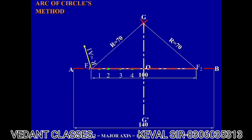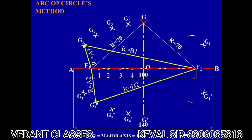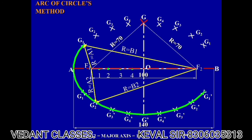Likewise, from F2 take a distance equal to B1 and continue making arcs. Keep making arcs like this to get successive points. When you have all the points, join them all to get the curve called an ellipse. This is how you can make an ellipse. Please like, subscribe and share the channel if you are finding it helpful. Thank you so much.